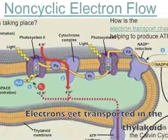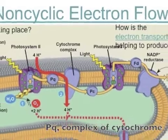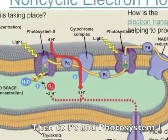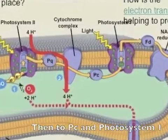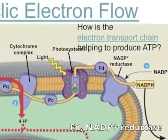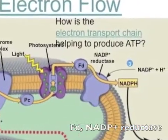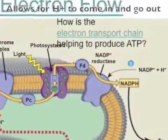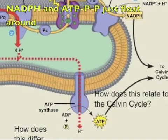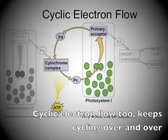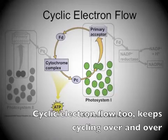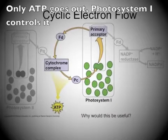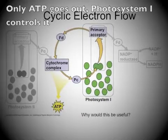Electrons get transported in the thylakoid — PQ complex, cytochrome, then to PC, and onto photosystem 1. NADP+ reductase allows H+ to flow, producing NADPH and ATP. Cyclic electron flow keeps cycling over and over, producing only ATP.